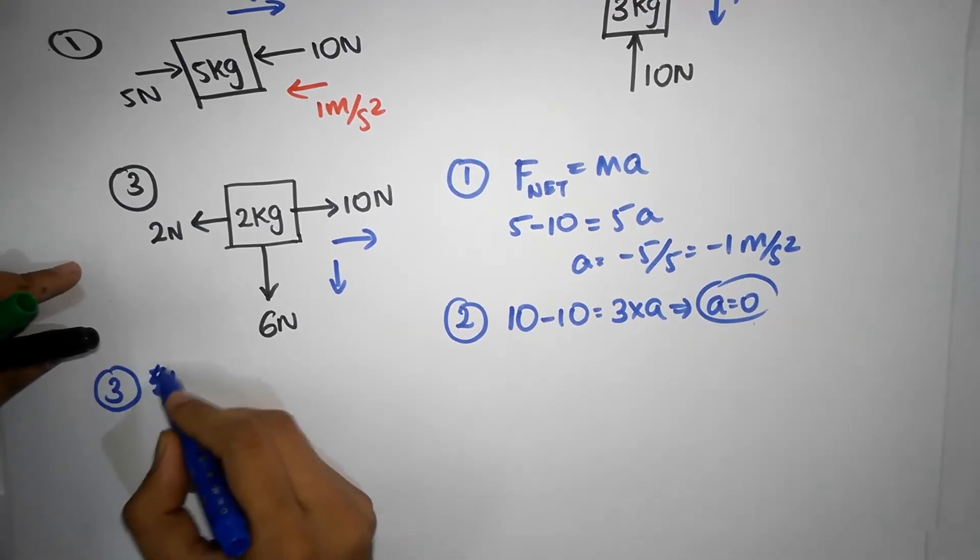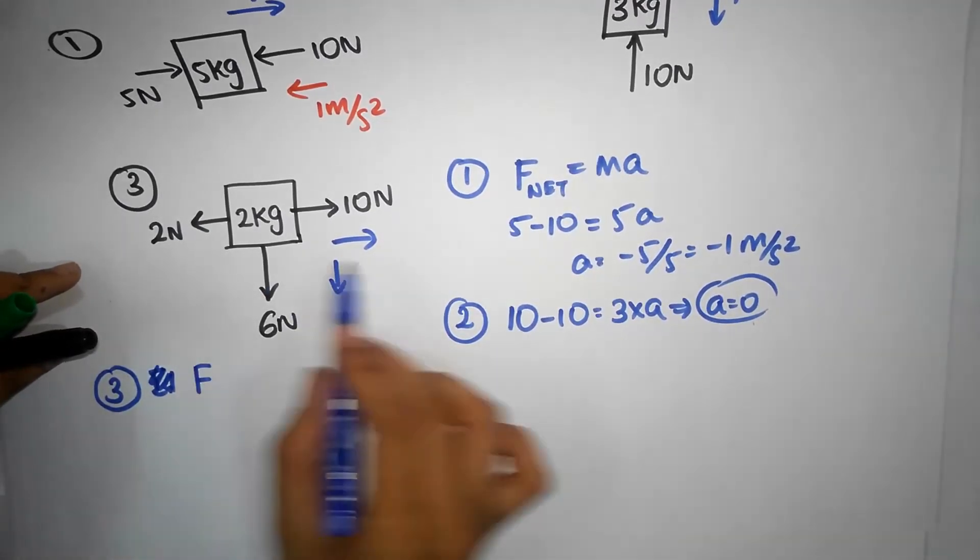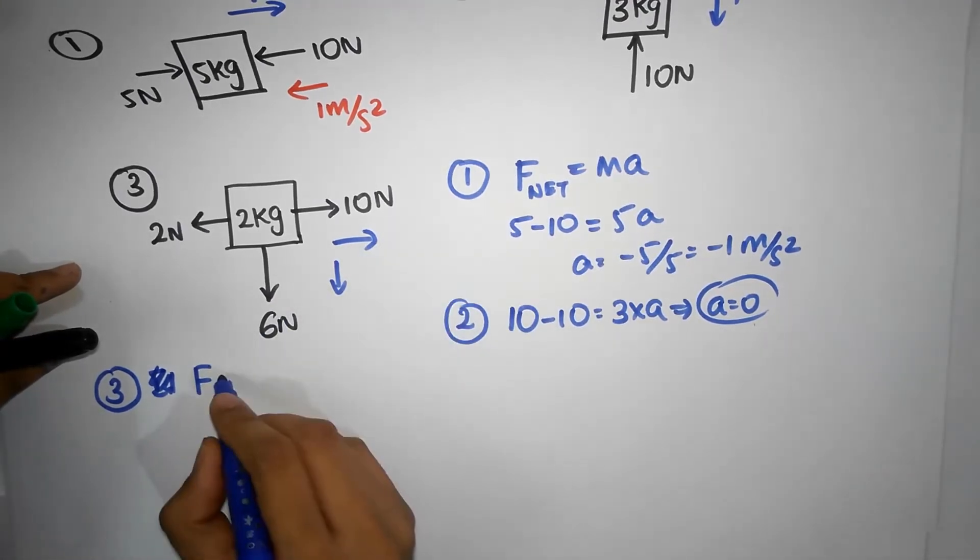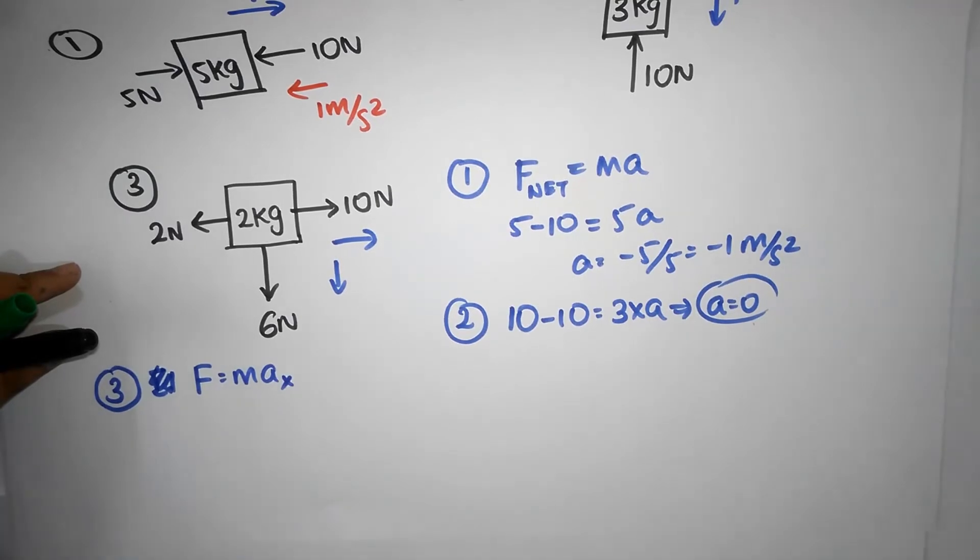So, if I use Newton's second law in the x direction, I can just say net force in the x direction, in the horizontal, must be equal to mass times acceleration in the x direction. So, it's only in the x.